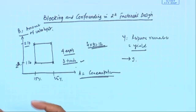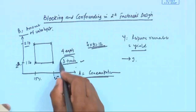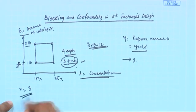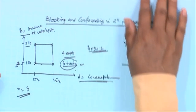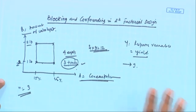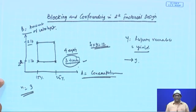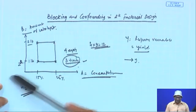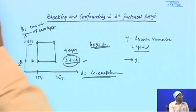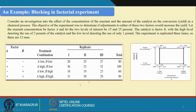The experiment is replicated 3 times, so n = 3 and you require 12 runs. This is a 2^2 design example we have explained and worked through before. The result table and the geometric representation of factors A and B have also been shown earlier.